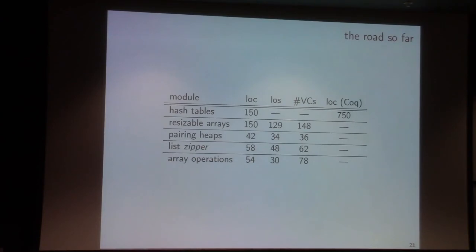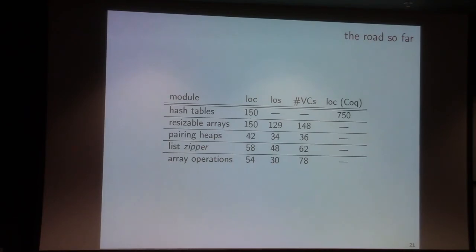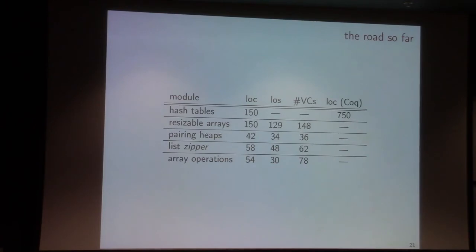Very quickly, to conclude: some statistics about the modules that are part of the library now and the modules we have proved so far. This represents lines of OCaml code, lines of specification in our specification language, the number of generated VCs if the module was proved using Why3, or lines of Coq proof for the CFML-verified modules. We have a hash table implementation, resizable arrays, priority queues using parent heaps, a zipper structure for lists, and some array operations — five modules so far that are part of our Vocal library.